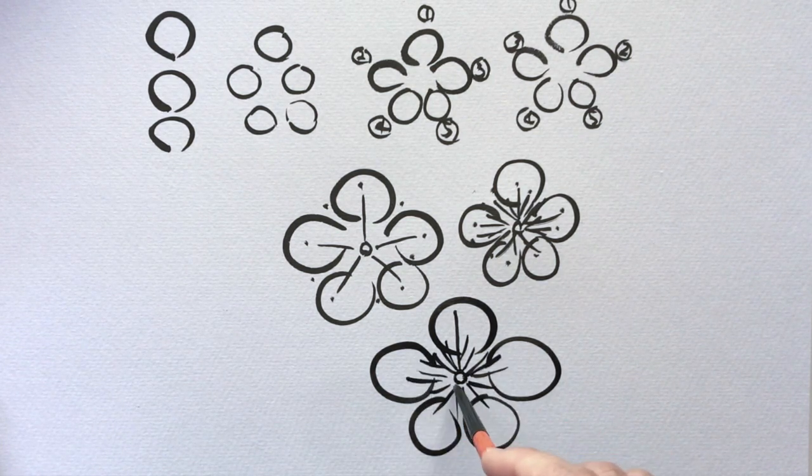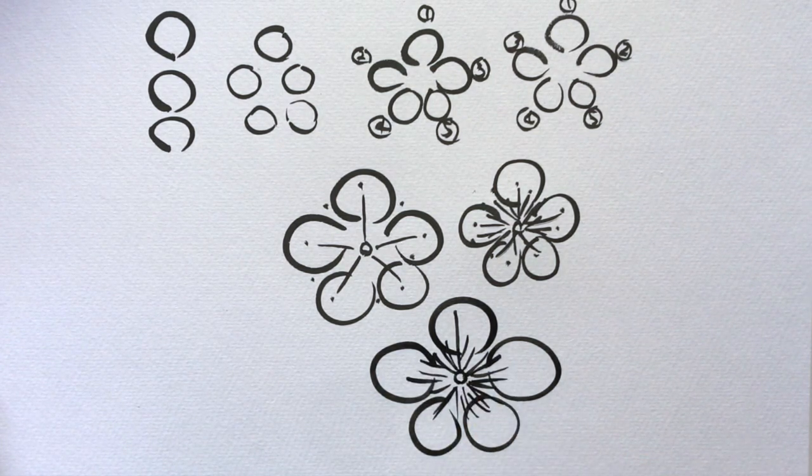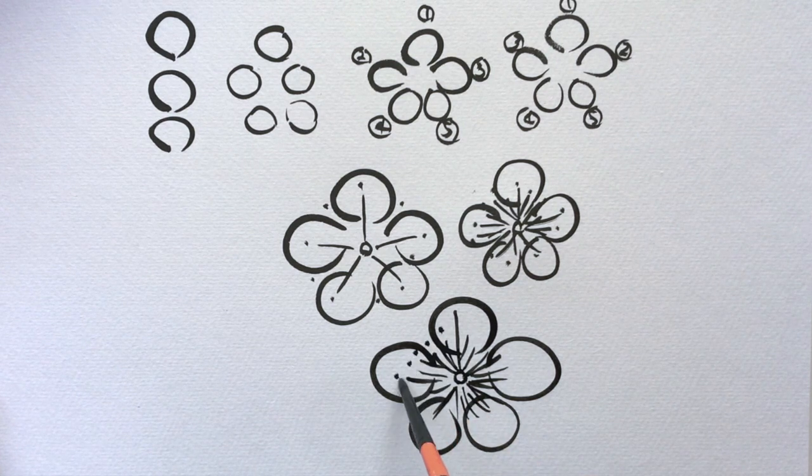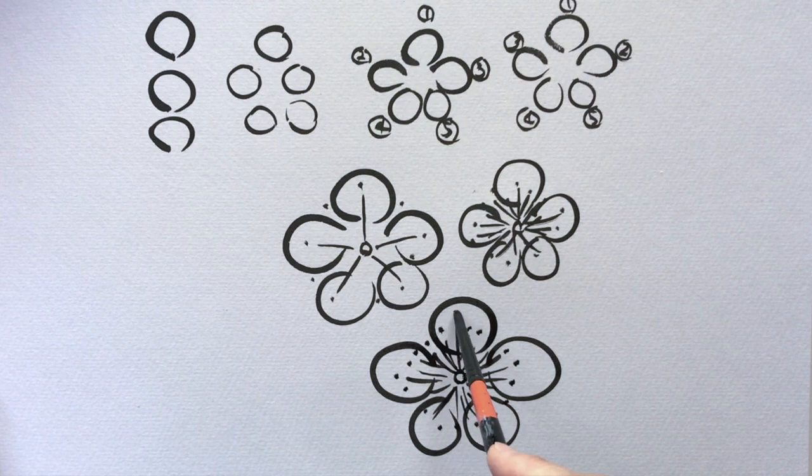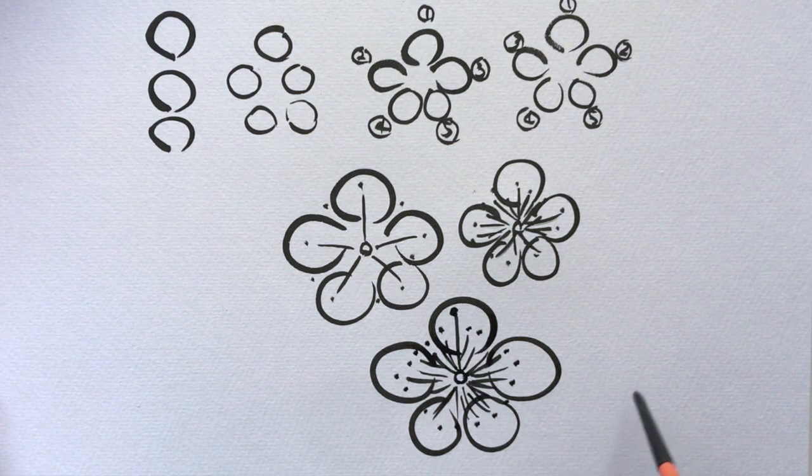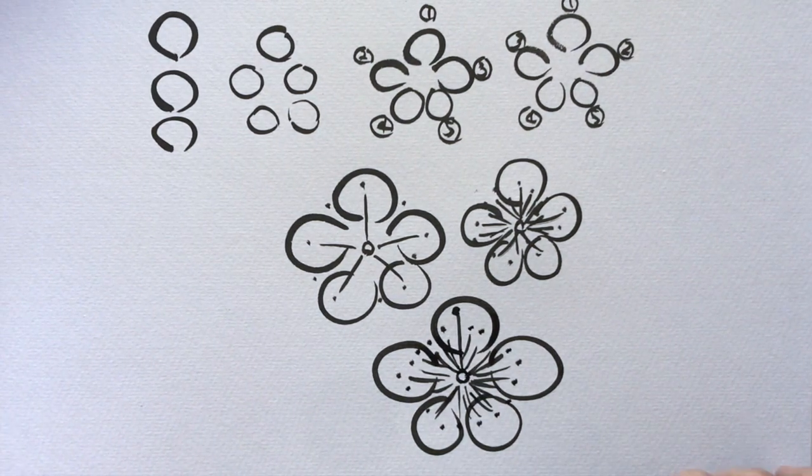These stamens have pollen on them, and when the bees come and pollinate onto the flower, they get the pollen onto the pistil, and that's what makes the fruit later.